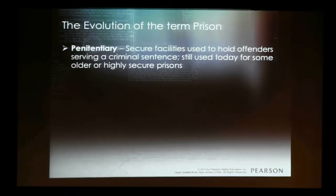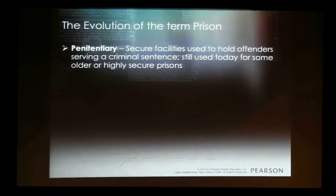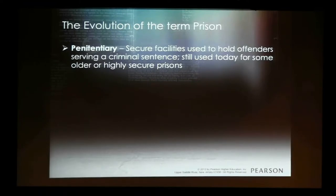Early on, we referred to prisons as penitentiaries. Penitentiaries go back to the early formations of correctional facilities in our society. If the name penitentiary is in the title, that facility was probably built sometime between 1790 and 1870 — so it's a very old building. Surprisingly, we still have some of those in operation. Brushy Mountain, out in East Tennessee, was recently closed about five years ago, but it dates back to the 1840s–1860s.